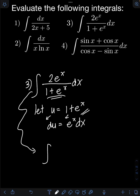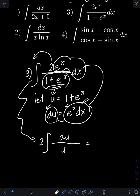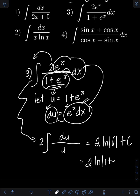The 2 is just a constant, so I can put it in front of the integral. We have 2 times the integral of: e raised to x dx is now equal to du, over 1 plus e raised to x, which equals u. So we have 2 times the integral of du over u, which equals ln of the absolute value of u plus C. Transforming back, the final answer is 2 ln of 1 plus e raised to x, plus C.